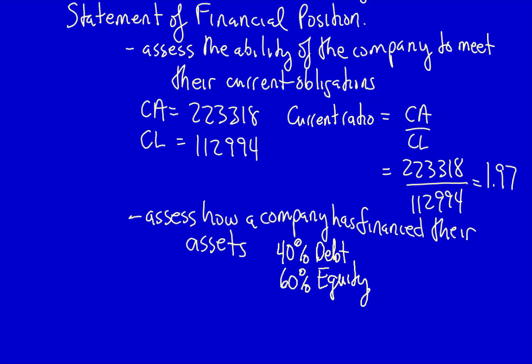An owner could use the statements to determine how much money they might be able to borrow from the bank, and the bank would use the same statements to determine how much to lend.